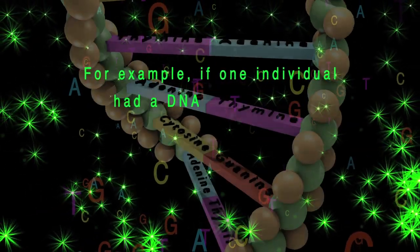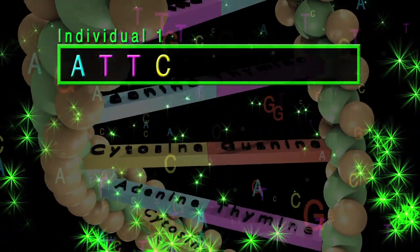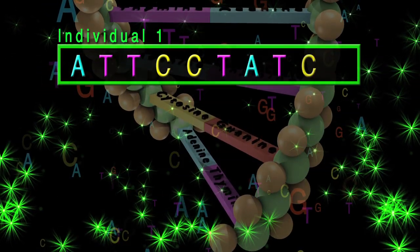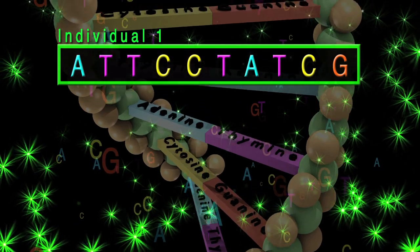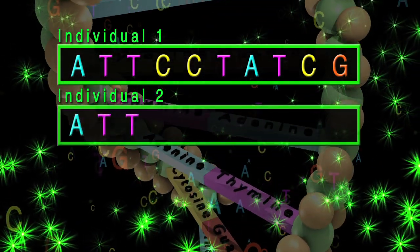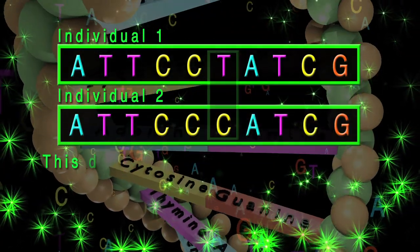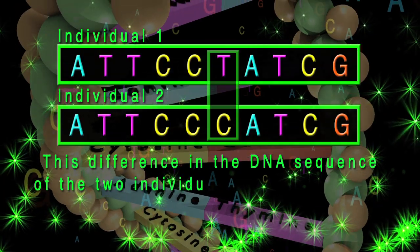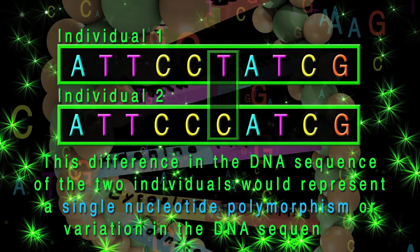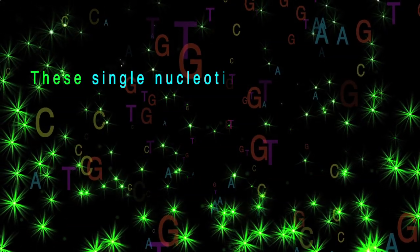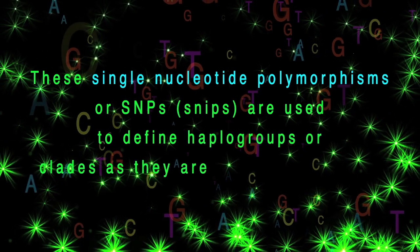For example, if one individual had a DNA sequence that read A-T-T-C-C-T-A-T-C-G, and a second individual had a DNA sequence in the same block which read A-T-T-C-C-C-A-T-C-G, this difference would represent a single nucleotide polymorphism or variation in the DNA sequence. These SNPs are used to define haplogroups, or clades as they are sometimes called.